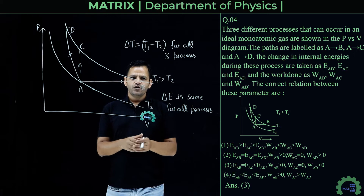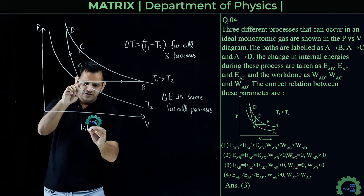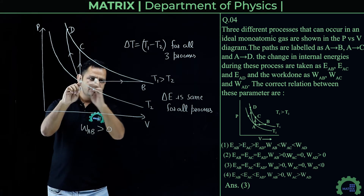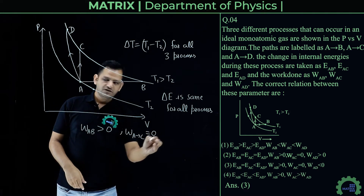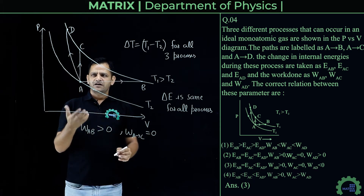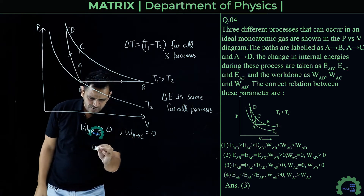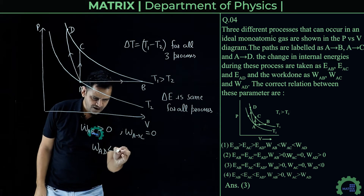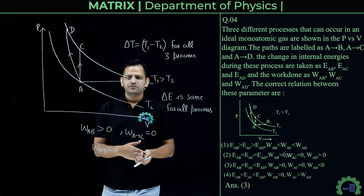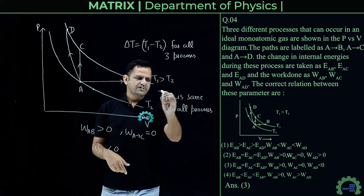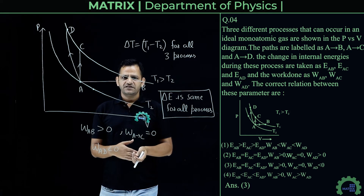There is a slight discrepancy with the given answer regarding work done. Work in A→B is greater than 0 (positive), work in A→C is 0 (isochoric), but work in A→D should be negative since volume continuously decreases. However, the given answer states W_AD > 0. The only option where ΔU is the same for all three processes is the correct one.